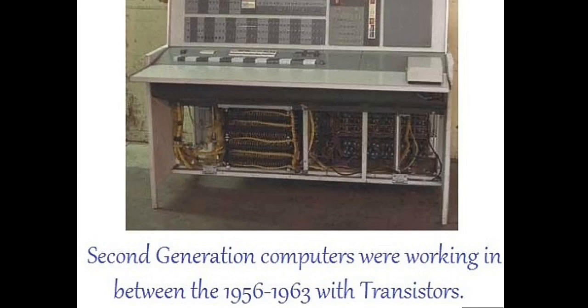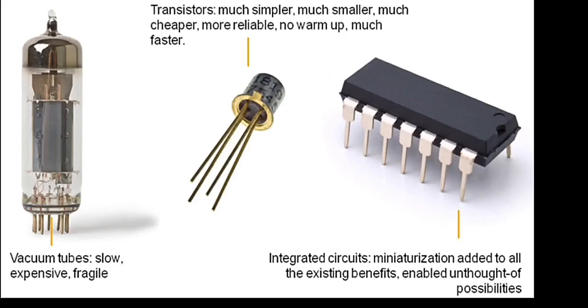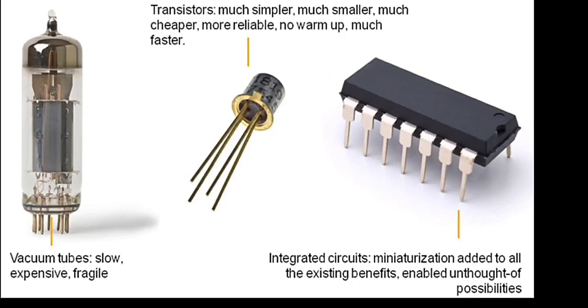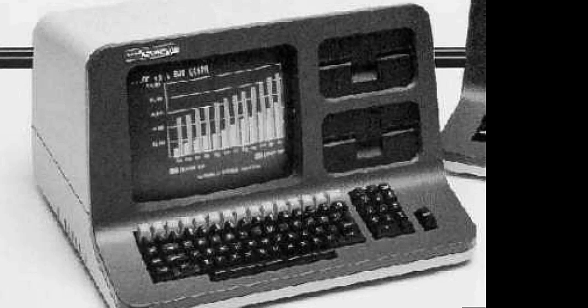The second generation of computers were developed between 1956 and 1963. Transistors replaced vacuum tubes in the second generation. The transistor was far faster than vacuum tubes, allowing computers to become smaller, faster, and more efficient than first generation computers.